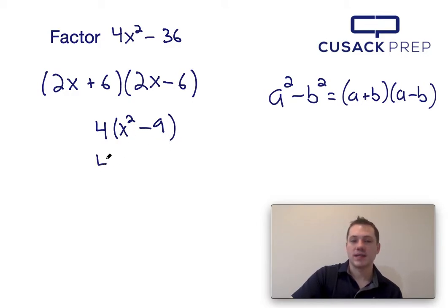Then I can factor x squared minus 9 using the difference of squares formula on the right side, and it would factor into 4 times x plus 3 times x minus 3.